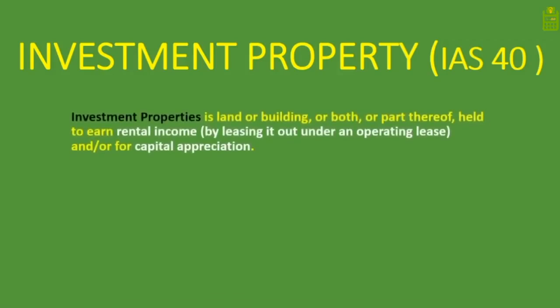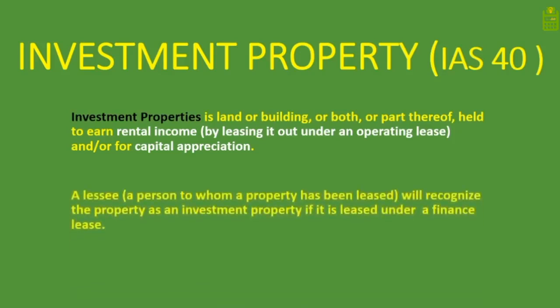Investment property is land or a building, or both, or part thereof, held to earn rental income by leasing it out under an operating lease, and/or for capital appreciation. To determine if a property should be classified as investment property, you look at its purpose. If a property is held for rental income or kept for capital appreciation — since land and buildings increase in value over time — then it is investment property.